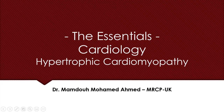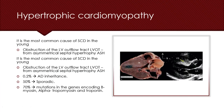Hypertrophic cardiomyopathy is considered to be the most common cause of sudden cardiac death in the young. As you can see in the illustration here, hypertrophic cardiomyopathy is characterized by obstruction of the left ventricular outflow tract. This obstruction is caused primarily by asymmetrical septal hypertrophy, which is considered the hallmark of the disease.